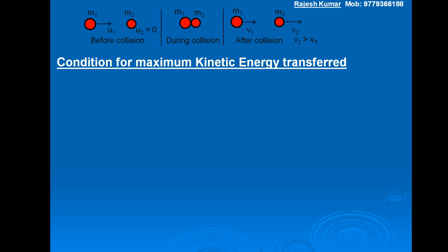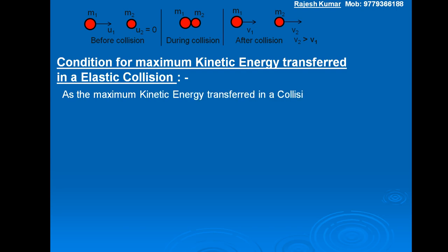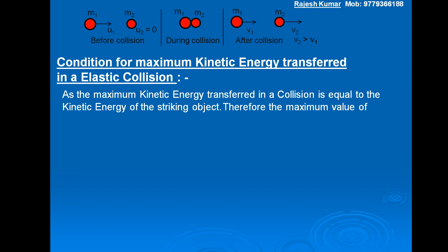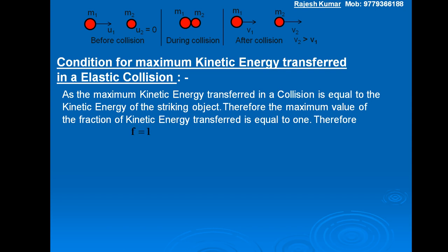Now, the condition for maximum kinetic energy transferred in an elastic collision. The maximum kinetic energy transferred equals the kinetic energy of the striking object, so the maximum value of the fraction F equals 1. Setting F = 1 and putting this into equation 7: 1 = 4M1M2 / (M1 + M2)².